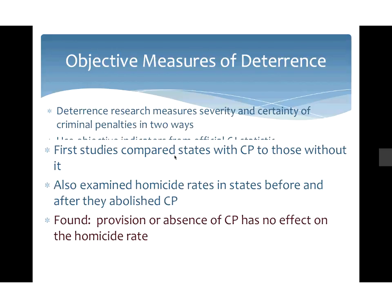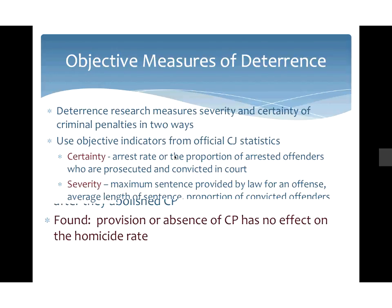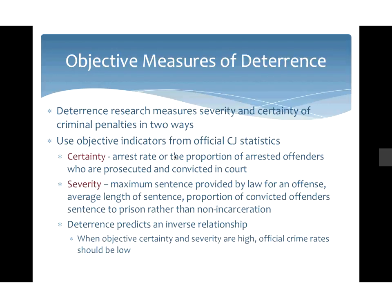How do we measure deterrence — stopping or preventing someone from committing a crime? Deterrence research measures severity and certainty in two ways. One is objective indicators using official criminal justice system statistics. For certainty, we look at the arrest rate or the proportion of arrested offenders who are actually prosecuted and convicted. This fails to account for people who commit crimes and are not caught. For severity, we look at the maximum sentence provided by law, the average sentence, and the proportion of convicted offenders sentenced to prison versus non-incarceration. Deterrence would predict an inverse relationship: when certainty and severity are high, the crime rate should be low.